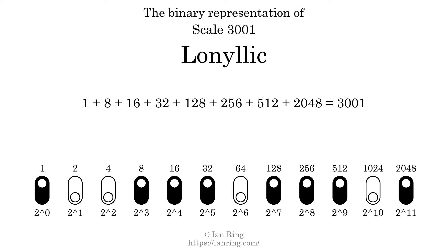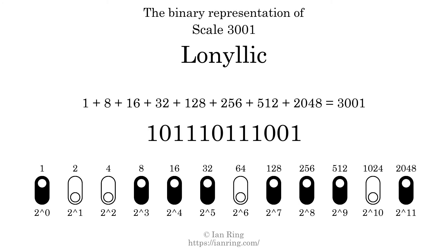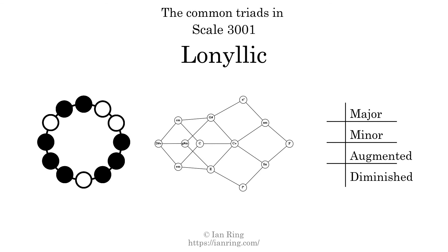The scale number not only enumerates the scale with a unique index, but it also literally describes the tonal content of the scale, represented as a binary number in base 2. The scale number is 1, 0, 1, 1, 1, 0, 1, 1, 1, 1, 0, 0, 1.